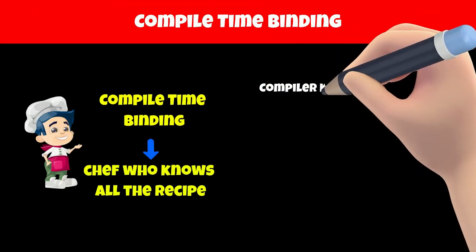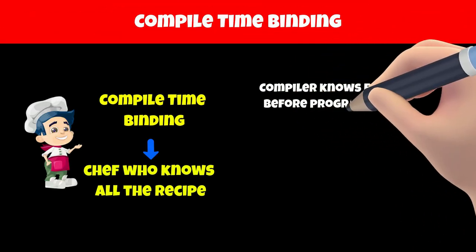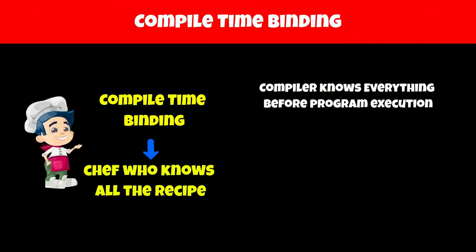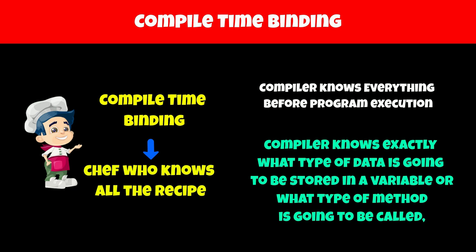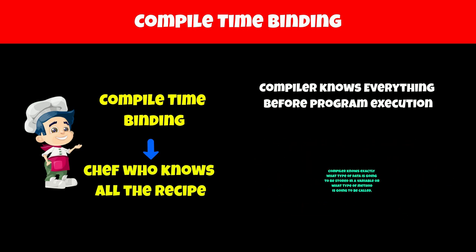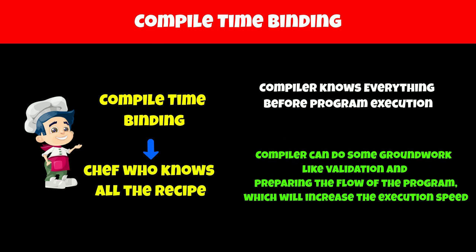Compile time binding is when the computer knows everything about your program before it starts running. This means the compiler knows exactly what type of data is going to be stored in a variable, or what type of method is going to be called, even before the execution of the program. Since the compiler knows this information before running the program, it can do some groundwork like validation and preparing the flow of a program, which will increase the execution speed.